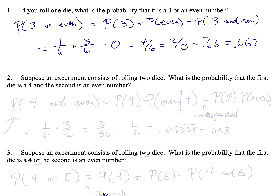Suppose an experiment consists of rolling two dice. What is the probability that the first die is a four and the second is an even number? This equals the probability that the first die is a four, times — remember, 'and' goes with multiplication whereas 'or' goes with addition — times the probability that the second one is even. Because these are independent events, the outcome of one does not affect the probability of the other.